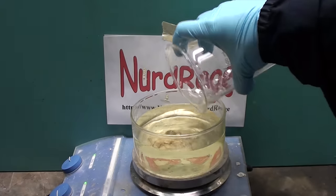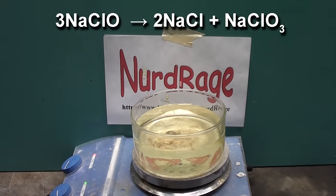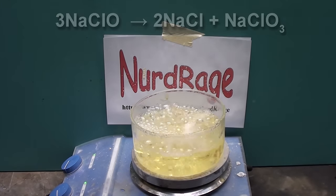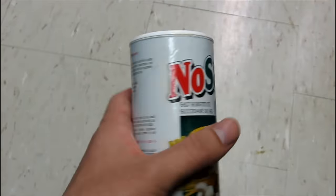Now we've already covered how to make potassium chlorate from bleach in a previous video. While that process is quick and easy, it's not very efficient or cost effective.